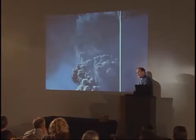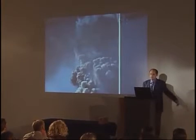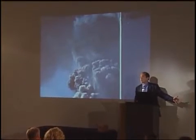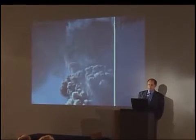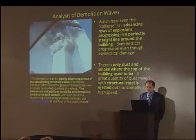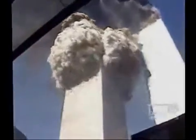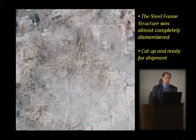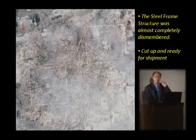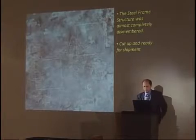How can it crush the structure below it symmetrically at free-fall speed when it's already off-center? We don't see it mangled up in some heap at the bottom on the pavement — it's been completely dismembered. We have asymmetrical damage, and yet there's this symmetrical destruction occurring underneath the cloud all the way around the building, even though this top mass has already fallen over. Free-fall speed doesn't make sense. The steel frame structure was completely dismembered. There are no large chunks of building, only those shards of the perimeter structure.